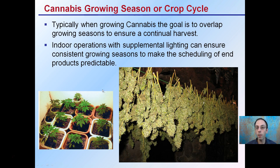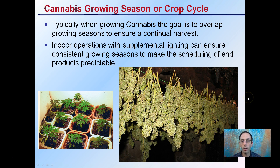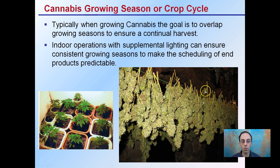This is more important for outdoor growing, and you can see areas where it tends to be much colder. The cannabis growing season is a crop cycle, and typically the goal is to overlap growing seasons to ensure a continual harvest. Indoor operations with supplemental lighting can ensure consistent growing seasons to make the scheduling of end products predictable. You always want to have some plants being propagated, some flowers drying, and keep this process continual.